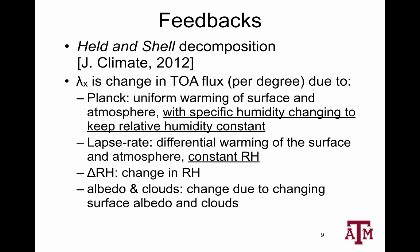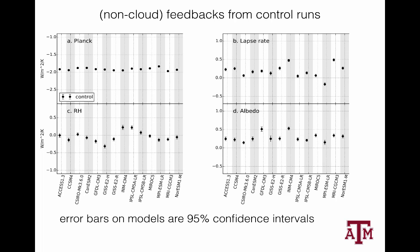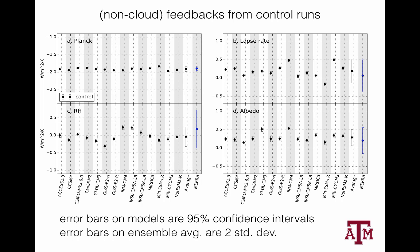Let's start looking at non-cloud feedbacks from the control runs: Planck, lapse rate, relative humidity, and albedo feedbacks. The second-to-last column is the ensemble average with two standard deviations, and the last column is the MERRA observational estimate of the feedbacks. You see they agree quite well. More than anything else, this gives me great confidence in the models — it gives you confidence that the models are breaking down the TOA flux as we would expect.